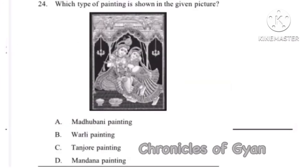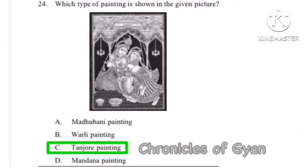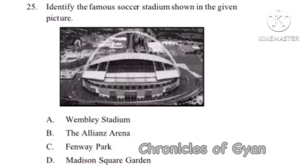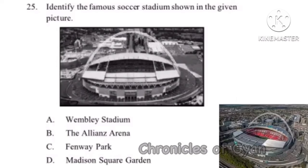Question 24: Which type of painting is shown in the given picture? The correct answer is Option C, Tanjore Painting. Question 25: Identify the famous saucer stadium shown in the given picture. The correct answer is Option A, Wembley Stadium.